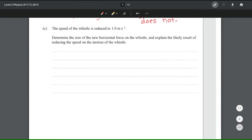The speed of the whistle is reduced to 1 meters per second. Determine the size of the new horizontal force on the whistle and explain the likely result of reducing the speed on the motion of the whistle. Just like we did in the last question we use our mv squared over r where our mass was 0.04, our new velocity is 1 so that's 1 squared divided by our radius of 0.5, putting that into our calculator gives me 0.08 newtons.